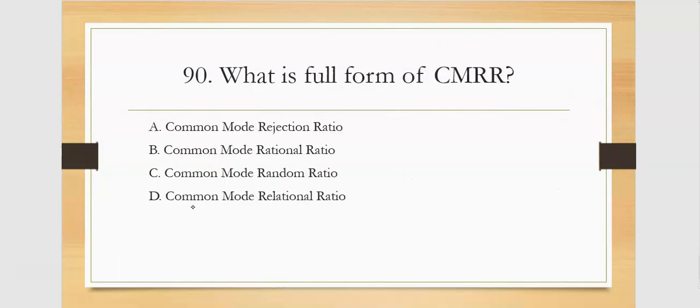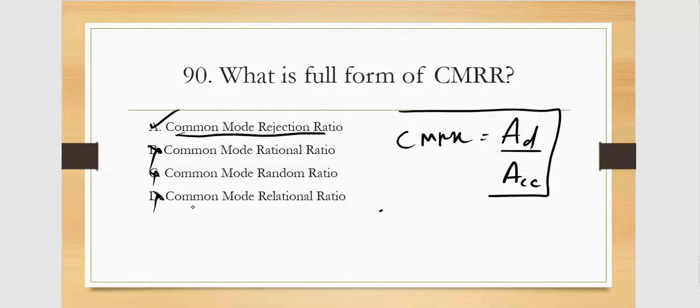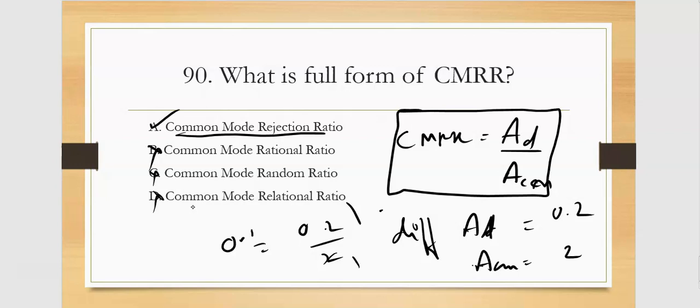What is the full form of CMRR? Common Mode Rejection Ratio. Very important: CMRR is the ratio of differential gain to common mode gain. It's Ad divided by Acm. The value should tend to infinity for ideal op-amps. If Ad and Acm are the same, CMRR will be 1.